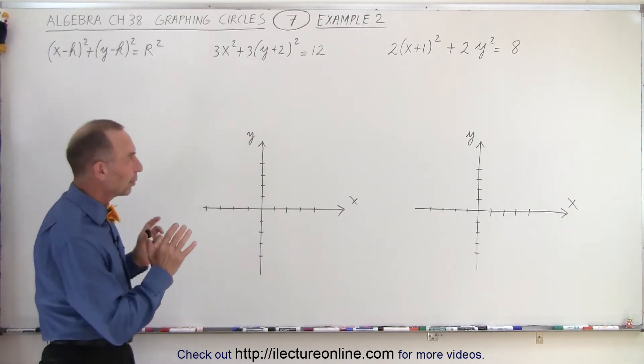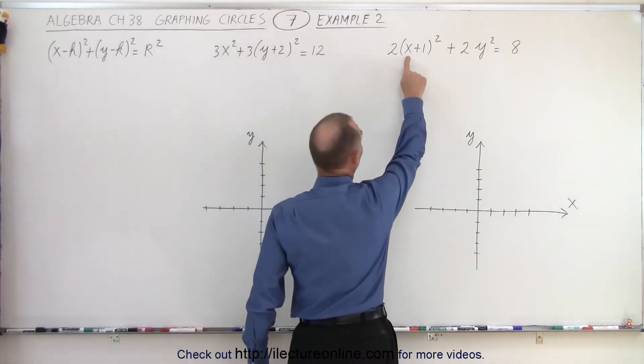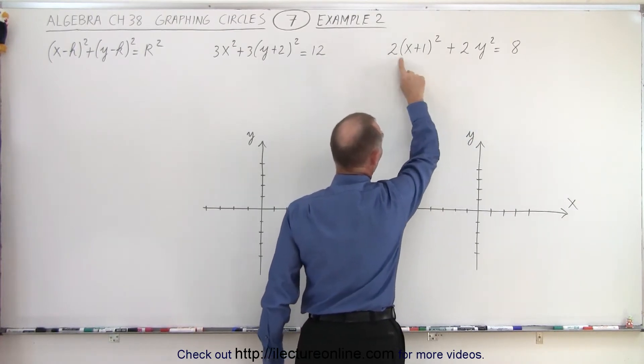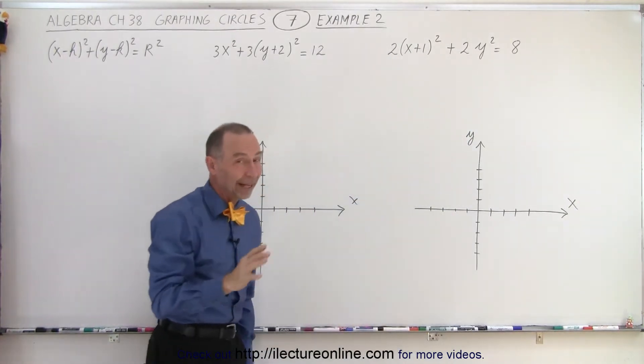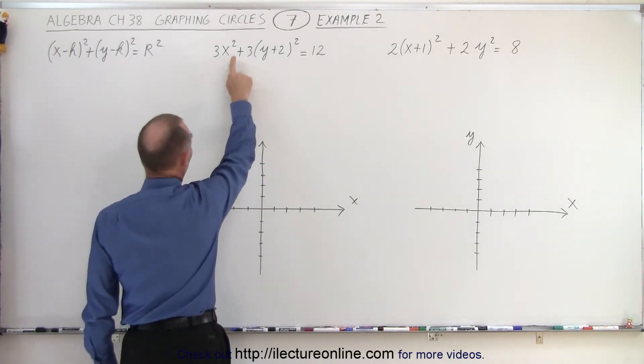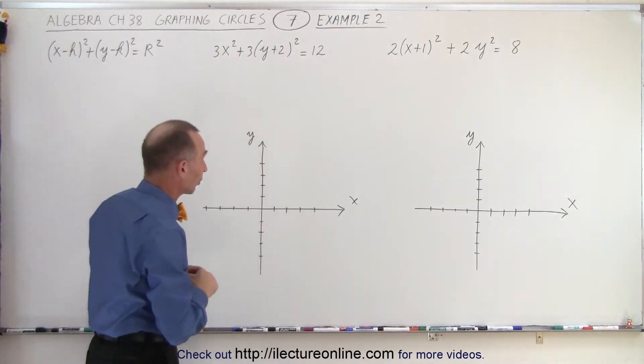But also we want to make sure that we're dealing with the equation of a circle. Notice that the coefficient in front of the x squared term and the coefficient in front of the y squared term must be the same. In this case they're both 2. Otherwise if they're not the same it's not a circle. Here again we want to make sure that the coefficients are the same. Otherwise we're not dealing with a circle. So in this case we are indeed dealing with a circle.